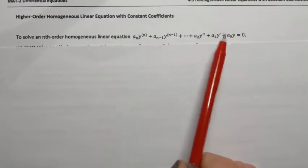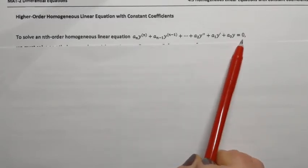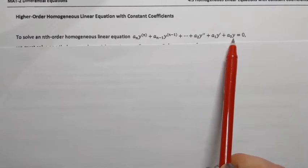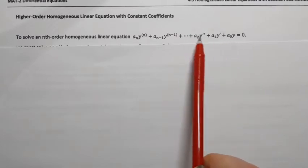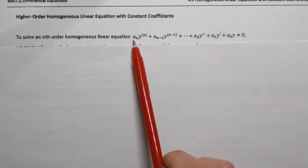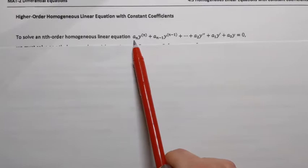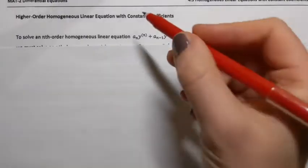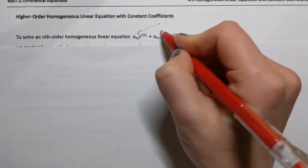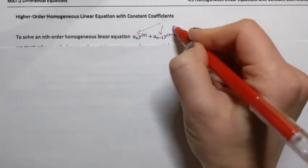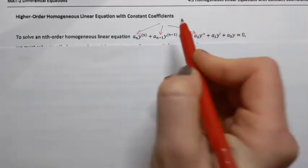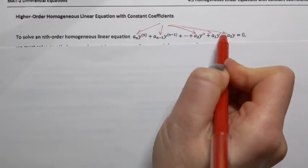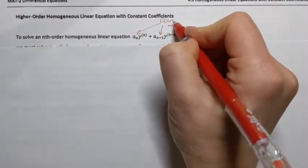Let me show how a homogeneous linear equation with constant coefficients looks like in general form. The right-hand side is zero — that makes it homogeneous. On the left-hand side, we can see y and its derivatives with constant coefficients: a sub n, a sub n minus 1, and so on. These are just some real numbers — constants.